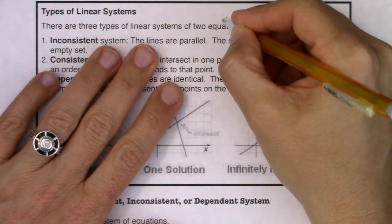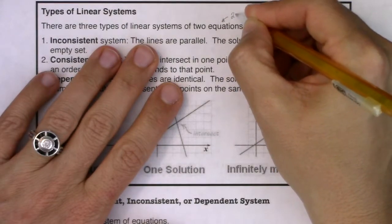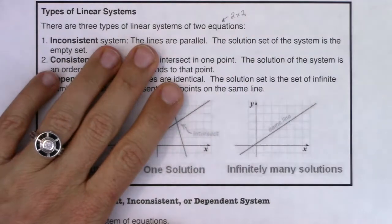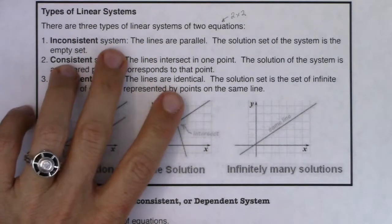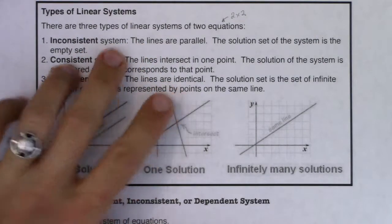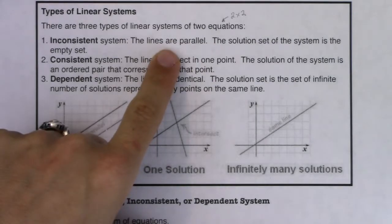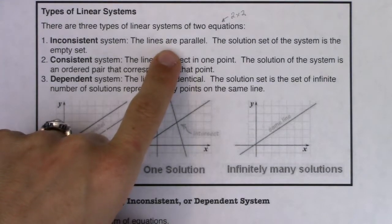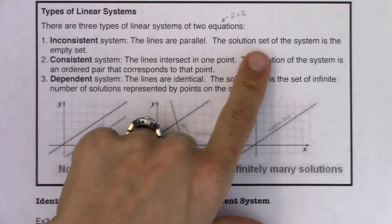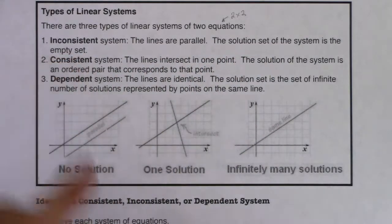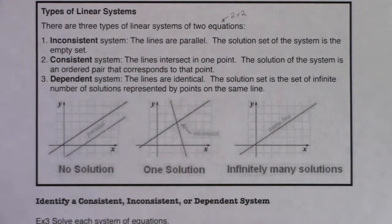When we talk about two equations, we're talking about two by twos. The first one is the inconsistent system. There are times when I'll give you a system of equations and the lines are parallel, meaning that one line does not intersect the other line, and then the solution set of that system is empty — meaning that there is no ordered pair that satisfies that system of equations.